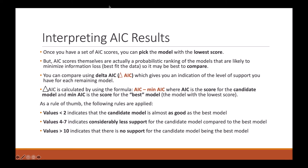So this is why sometimes you may not always want to take the model with the lowest score completely, because your other models may be almost as good. Delta values between 4 and 7 indicate considerably less support for the candidate model compared to the best model, and values more than 10 indicate that there is no support for the candidate model being the best model.